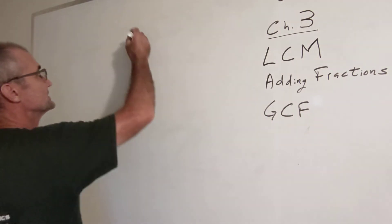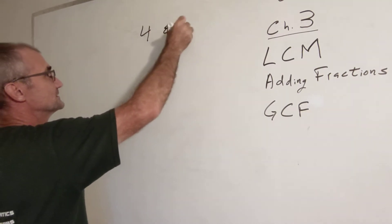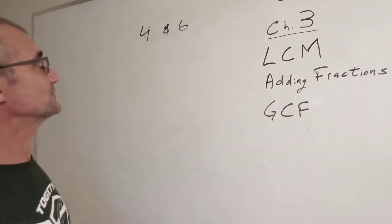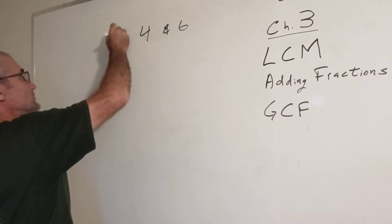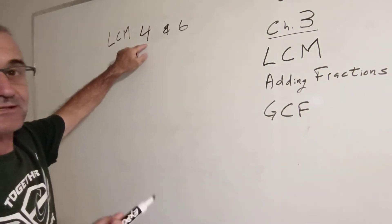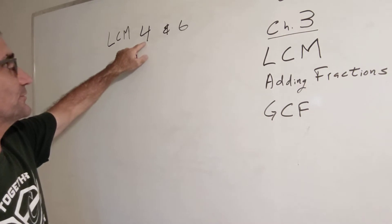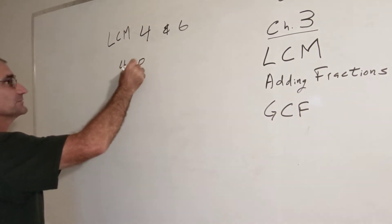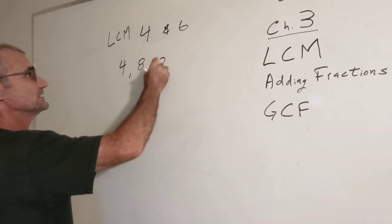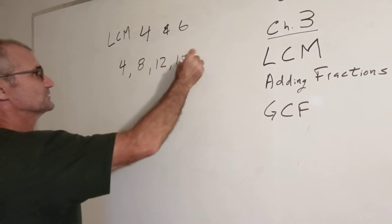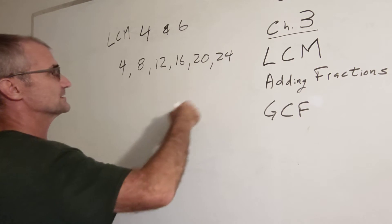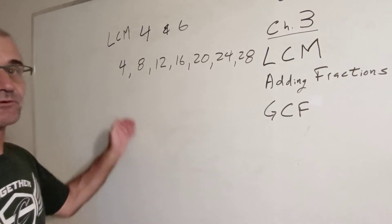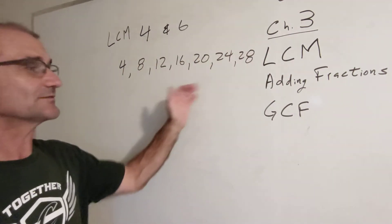So let's look at two different numbers: 4 and 6. What is the least common multiple for those two numbers — the LCM for 4 and 6? Let's break it down into steps. Let's find the multiples of 4: 4 times 1, 4 times 2, 4 times 3, 4 times 4, 4 times 5, 4 times 6, 4 times 7 would be 28. Those are the multiples of 4, and it goes on infinitely — it's a series that will never end.